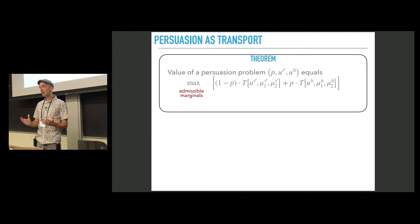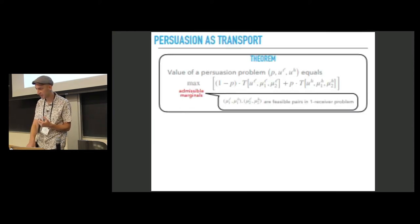It turns out that the value of the persuasion problem is given by a convex combination of the values of two transportation problems, one with utility ul, another with utility uh. But the marginals in these two transportation problems are related one to another. They satisfy a certain admissibility constraint.